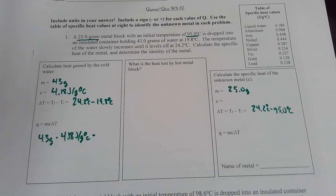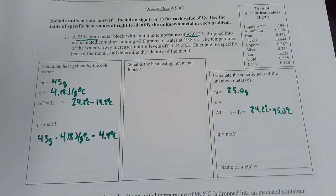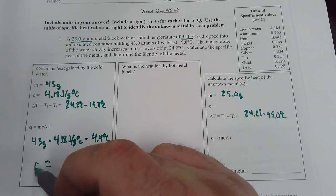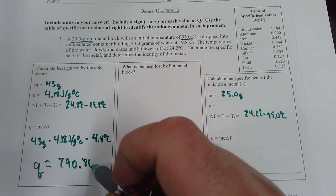So our delta T is 4.4 degrees Celsius. So I'm going to take that and multiply it times the 4.18 times the 43. And I find that my Q is 790.86 joules.